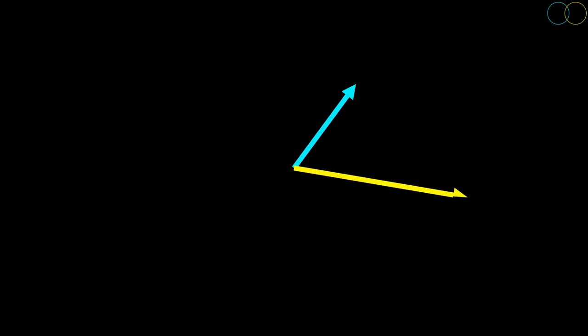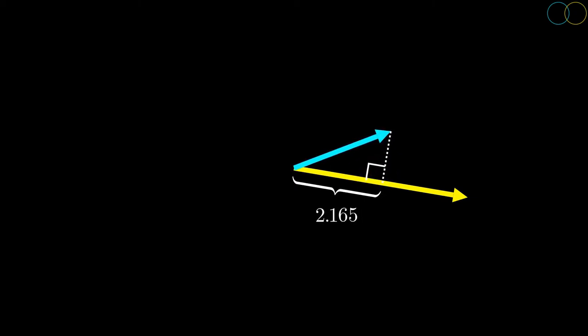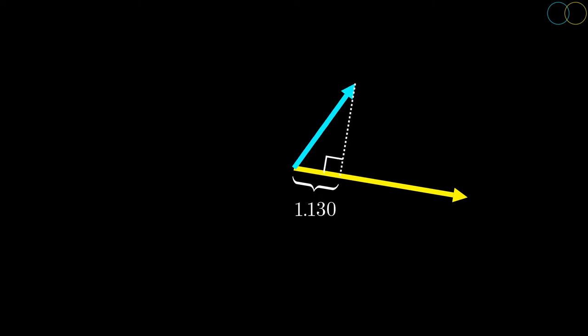I also want to talk about the scalar projection of one vector onto another. The scalar projection tells us how long you'd have to go in the direction of the second vector to be at a right angle from the first one. This means that if the two vectors have the same direction, the scalar projection will just give the magnitude of the first vector. Also, if the two vectors have a right angle to one another, then the scalar projection will be zero. Intuitively, one might imagine the projection as the length of the shadow that one vector casts onto the other.